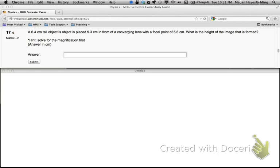You are trying to find the image height. Let's write that down so we don't forget. What values am I given in the question? Well, the object height was given, the object distance was given, and the focal length of the lens. These are all your givens.